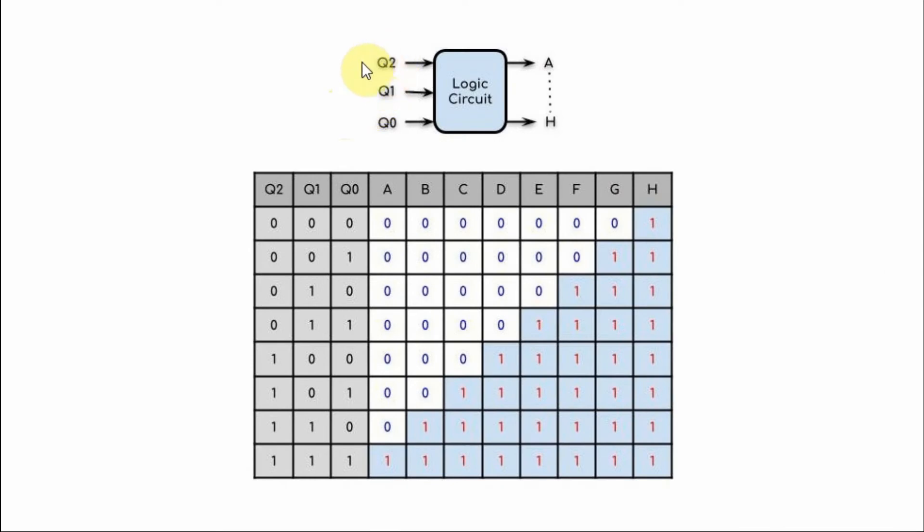The next step in the design is to take the counter output and apply it to a logic circuit to generate an 8-bit output from A to H. This truth table relates the input with the output, and for each count value, these are the output patterns we want to get.